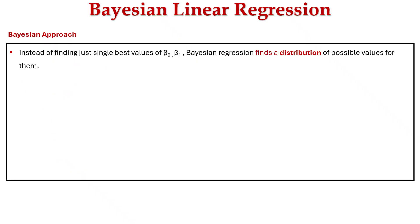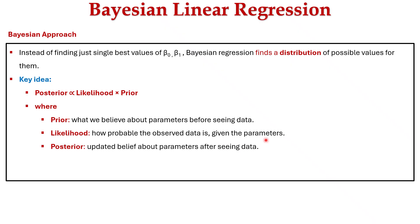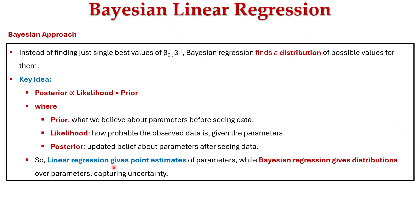In the Bayesian approach, instead of finding just a single best value of β₀ and β₁, it finds the distribution of possible values for them. The key idea is that the posterior distribution is proportional to likelihood times prior, where prior is what we believe about the parameters before seeing the data, likelihood is how probable the observed data is given the parameters, and posterior is the updated belief about the parameters after seeing the data. Linear regression gives point estimates of parameters, while Bayesian regression gives distributions over parameters, capturing uncertainty.